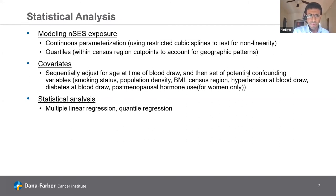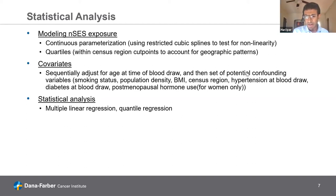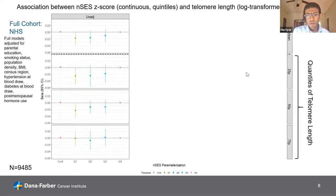For our statistical analysis, we used multiple linear regression to look at mean telomere length as the outcome, but we also used quantile regression. What quantile regression allows us to do is estimate associations between our exposure and different extremes of the outcome distribution. Some literature looking at contextual environments and telomere length suggested that these patterns reveal themselves more at the extreme ends of the distribution rather than the mean.